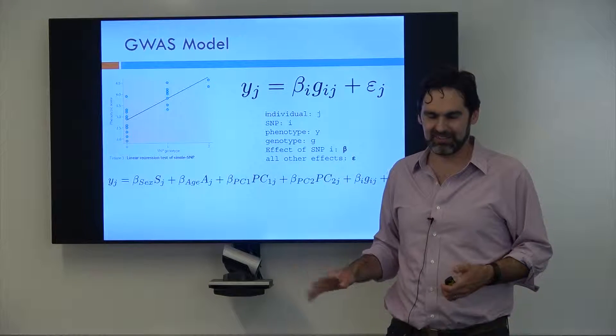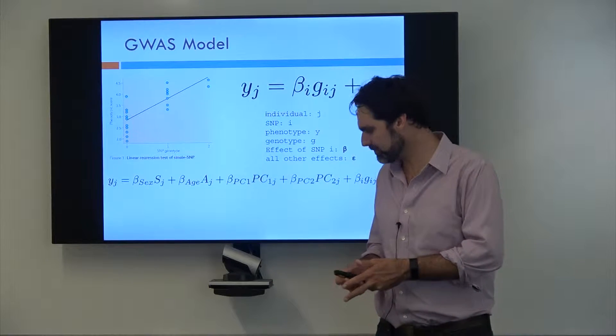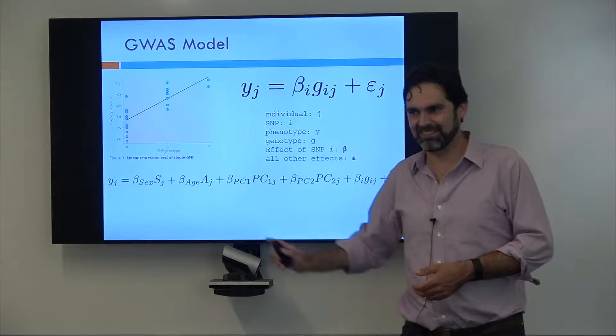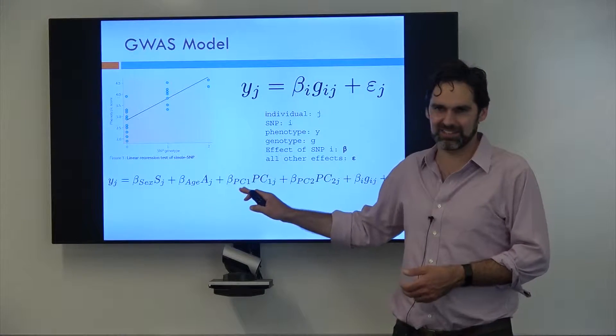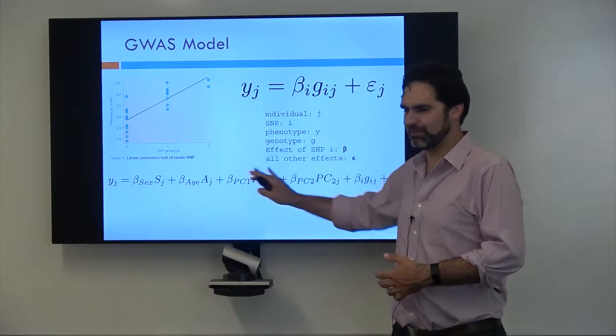But by using the principal components you remove that problem. Not super important to understand unless you're doing GWAS yourself, in which case you'll learn much more about this. And because this is less important, I'm going to stop showing it for the rest of the thing, but just be aware that when people say they controlled covariates like age and sex and PCs, that's what they're doing.